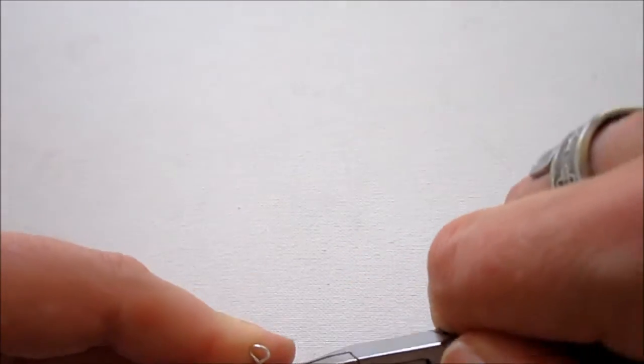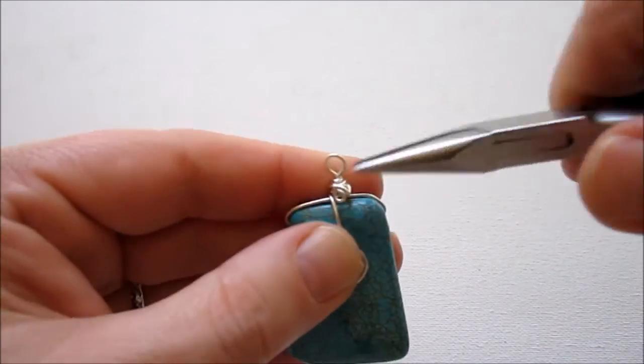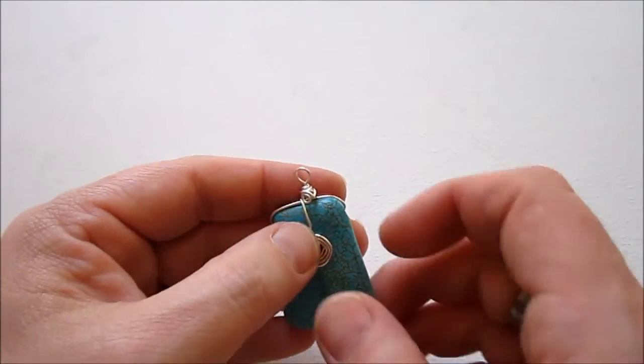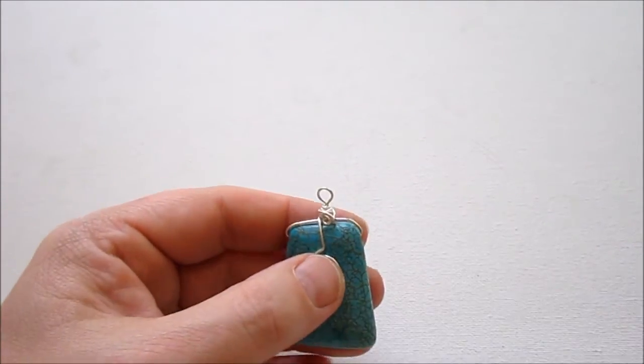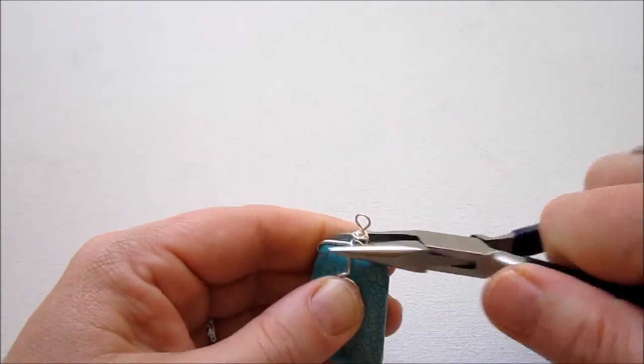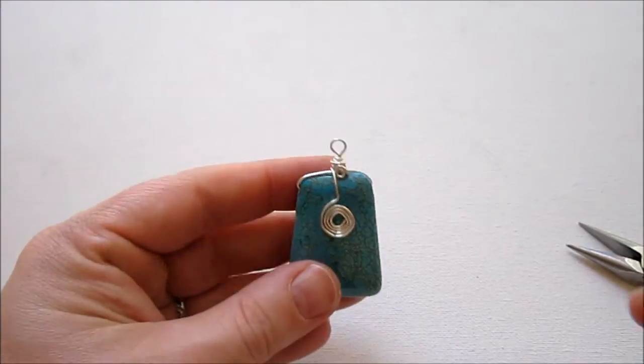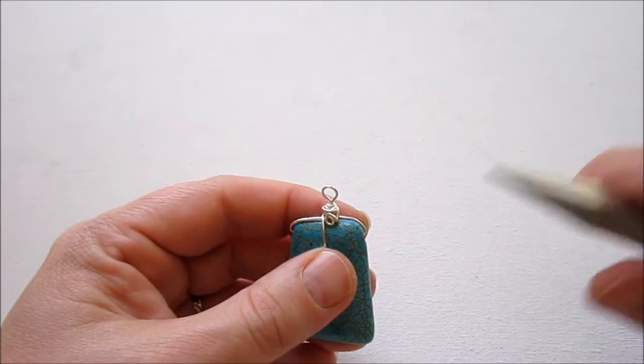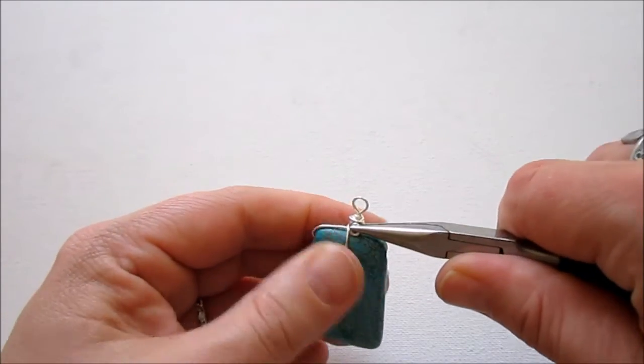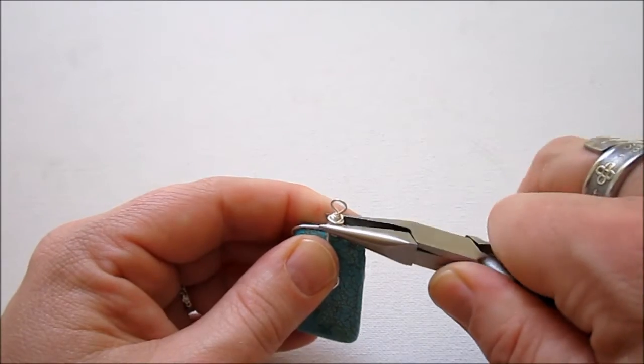And then you just sort of bend around so that the spiral is in front of the wire. And you can even just take your pliers and push it down.